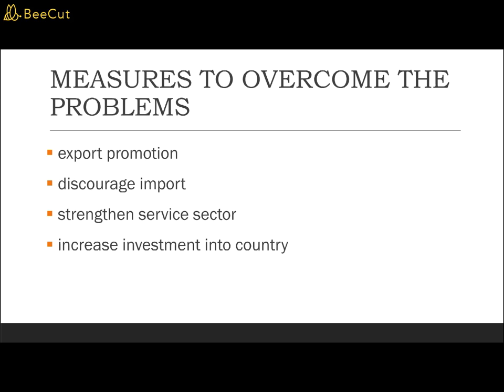The second measure is discouraging imports. The government can restrict imports of consumer products and substitute them with locally manufactured products. This can be achieved by imposing high tariff rates or quotas for imported products. When such measures are levied on imported goods, their import prices will increase and the quantity demanded will decrease. Through campaigns, the government can increase the sense of loyalty among consumers to buy locally manufactured products — for example, the 'Belilah Barangan Buatan Malaysia' campaign to encourage Malaysians to buy locally made products.